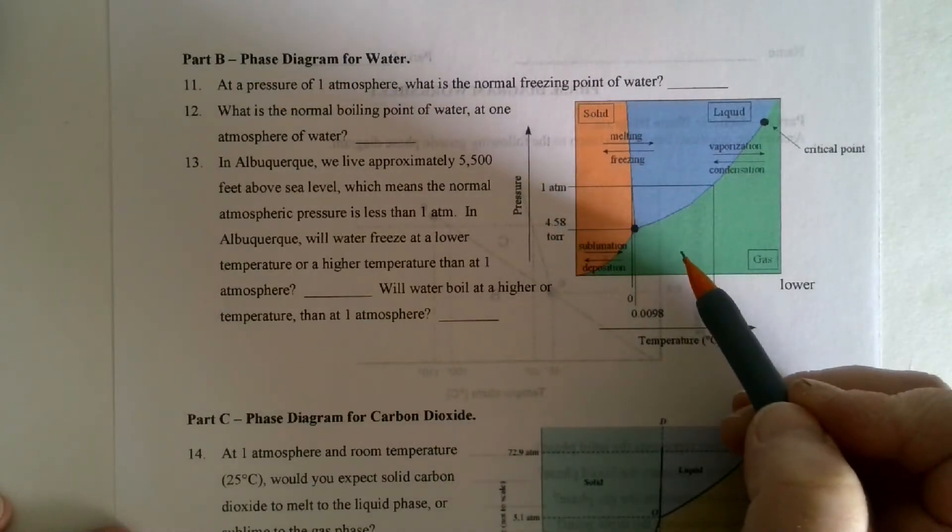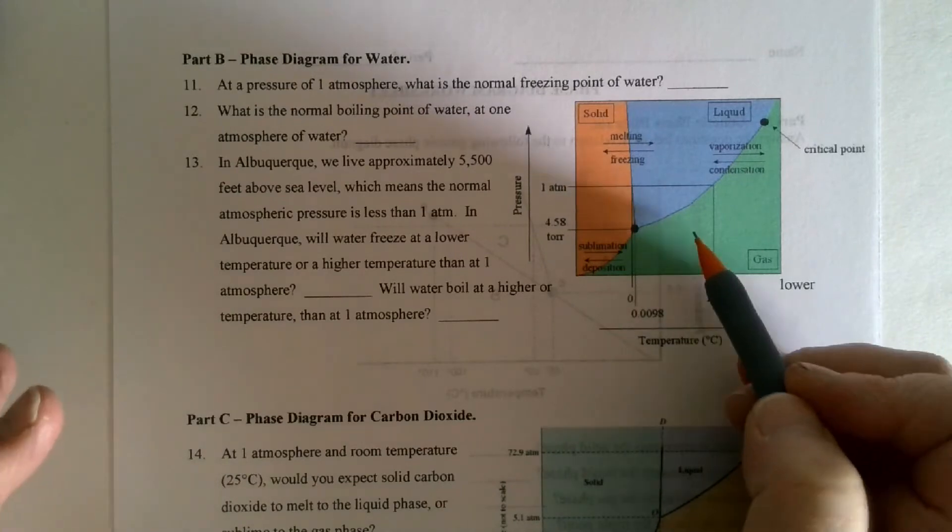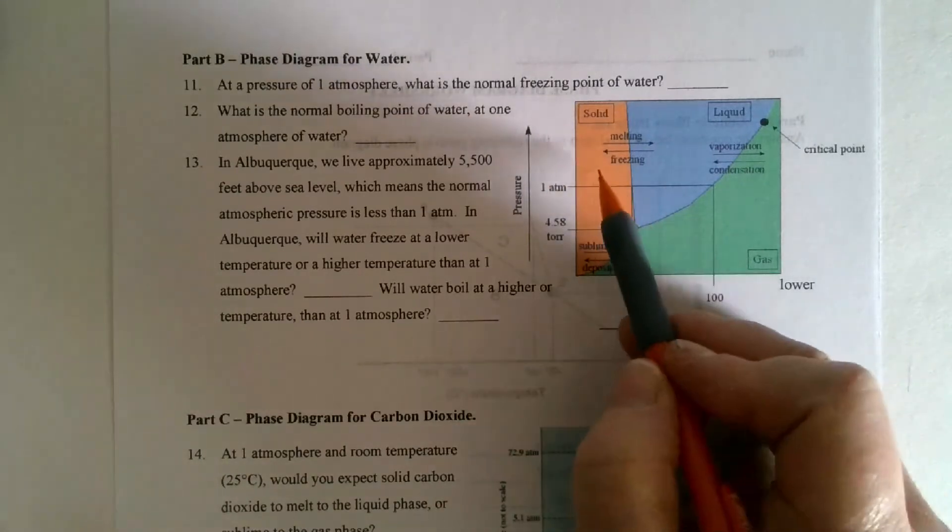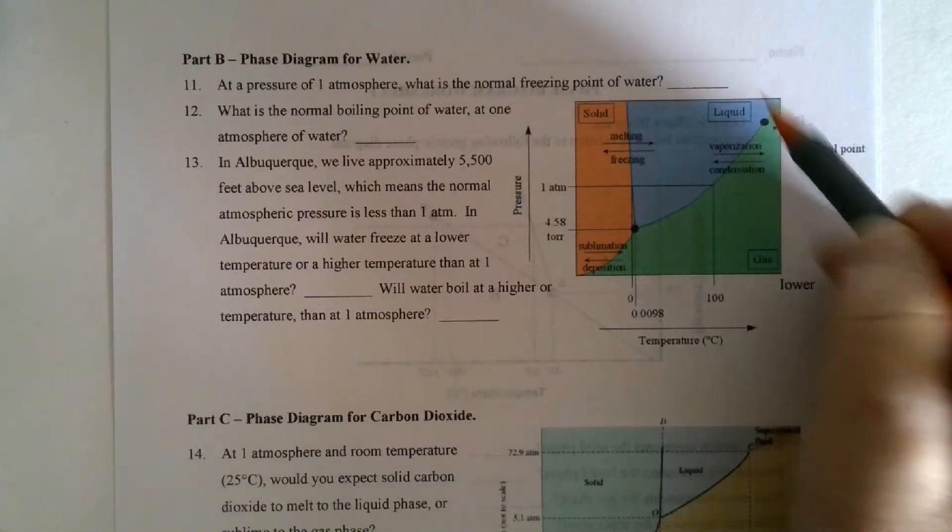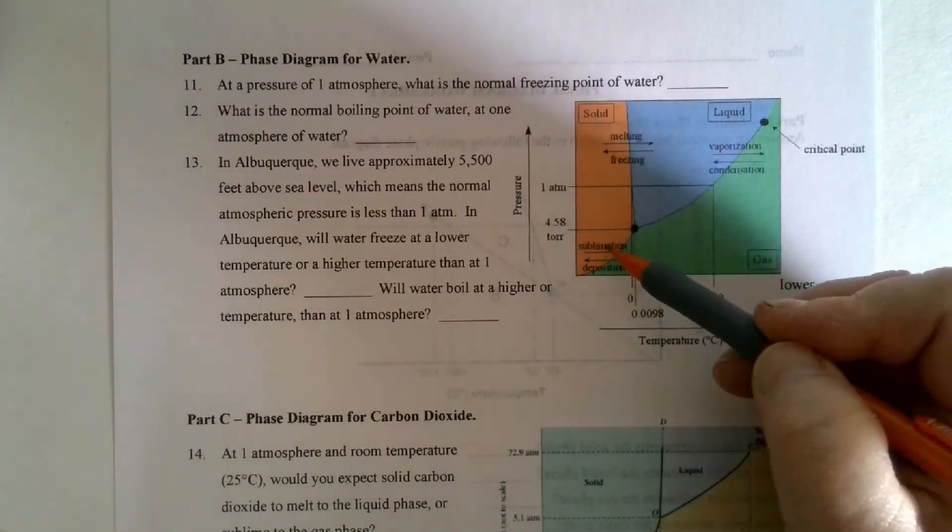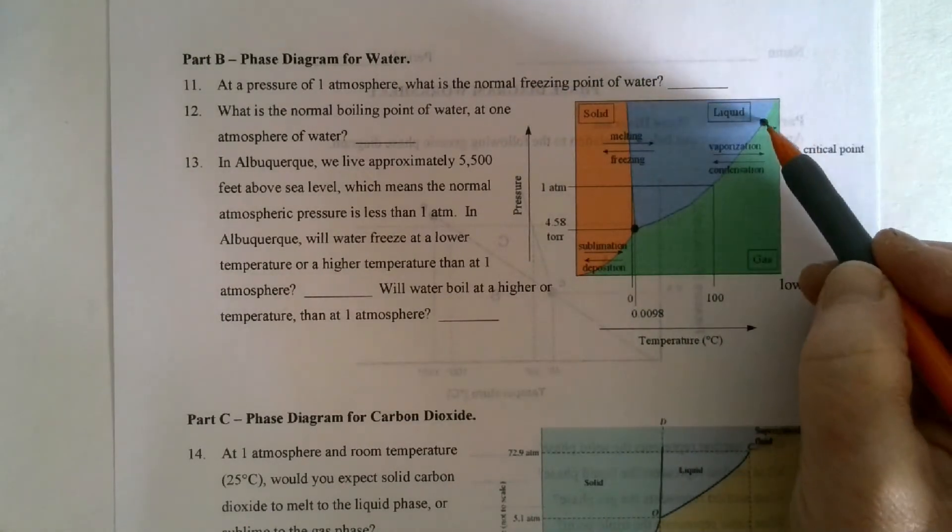We see where the triple point is at. We see the normal pressure. Remember, whenever you look at a graph, when you get a graphing exercise, you should always look at the graph to see what it's really showing. It tells you where the solid, liquid, and gas are. It tells you how to do the vaporization, the condensation, the melting, the freezing, the sublimation, and deposition. So this is quite a complete graph. It also indicates the critical point. Remember, there's not a distinguishing factor between the liquid and the gas.